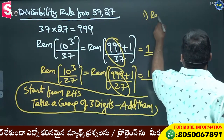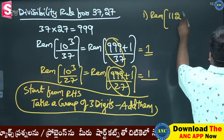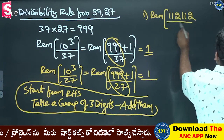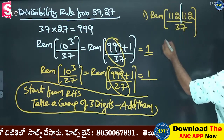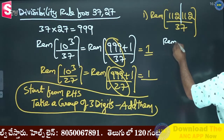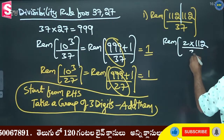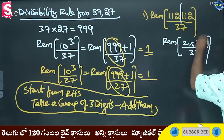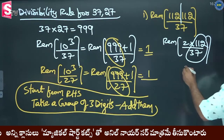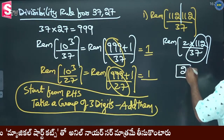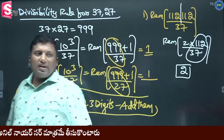One example: reminder for 1 1 2 1 1 2 divided by 37. Take a group of three digits, add them: 112 plus 112, equals 2 into 112 = 224. Divide by 37: 37 ones are 37, 15, 37 threes are 111. Reminder is 1. Is the idea clear?